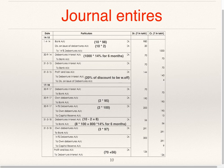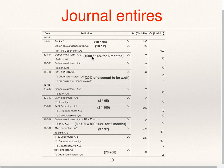Now we will see the journal entries. At the time of issue in 2014-15: bank account debit — 10 debentures at 98 equals 980; discount on issue of debentures — 10 into 2 equals 20; to 14% debentures account 1000. First interest on 30th September: debenture interest to bank — interest is always calculated on face value, so on 1000 at 14% for six months equals 70. The same entry is repeated on 31st March 2015: debenture interest to bank 70. Then debenture interest is transferred to profit and loss account.